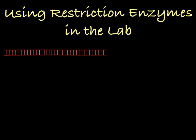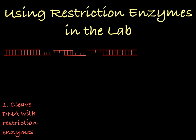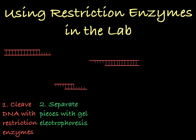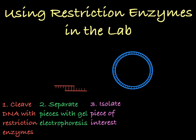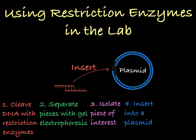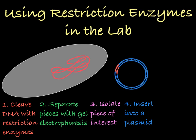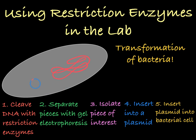In a lab setting, after you've cleaved a DNA molecule, you can separate these DNA fragments using gel electrophoresis, and then isolate a piece of interest. You can take this DNA piece of interest and insert it into a plasmid that's been cut by the same restriction enzyme, and then insert this plasmid into a cell to transform bacterial cells.